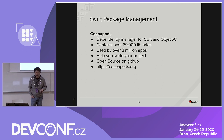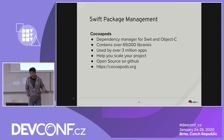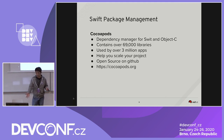Talking about Swift package management, there are two choices. The first is CocoaPods, the second is Carthage. CocoaPods is one of the more popular ones — it's a dependency manager for Swift and Objective-C. It contains over 69,000 libraries, is used by 3 million apps, and helps you scale your project. If you go to cocoapods.org, you can find all the available libraries for Swift.